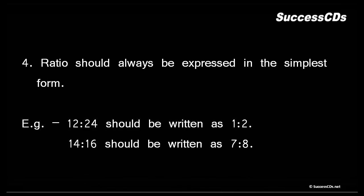Next point says ratio should always be expressed in the simplest possible form. Let's have a look. 12:24 should be written as 1:2 because both are divisible by 12. Same way, 14:16 should be written as 7:8 because both the terms are divisible by 2.